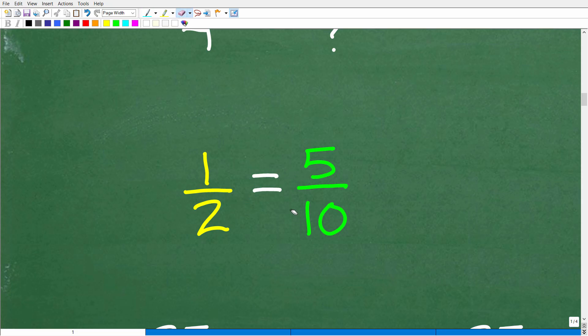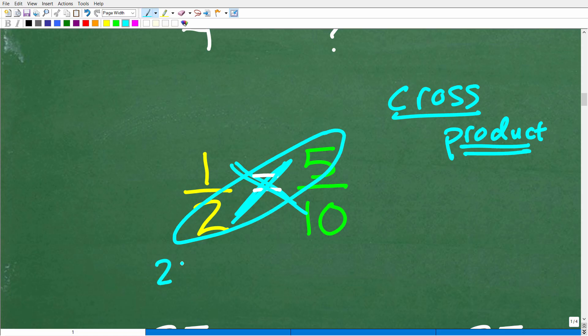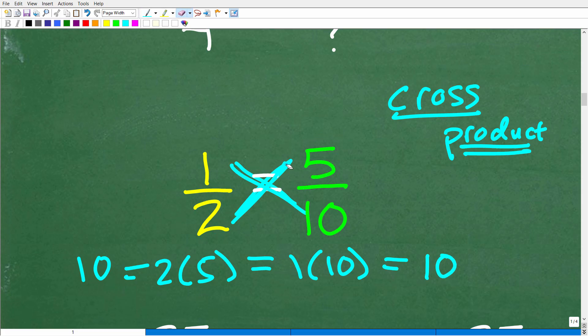The main property I want you to know is the cross-product. The cross-product will solve most or almost all proportion problems. Cross-product means we're going to cross-multiply. So 2 times 5 here is going to equal 1 times 10. When you have a proportion, the cross-products are equal. 2 times 5 is 10, 1 times 10 is 10. This is how you solve proportion problems.